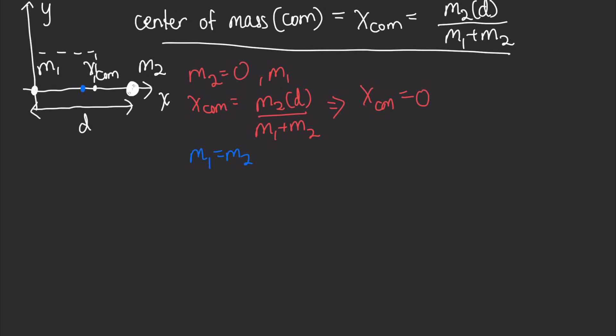So after calculating the x-center of mass, we get M2 times D divided by M1 plus M2, and this simply reduces to 2M2 times D divided by 2M2, and this is just equal to D over 2, which is the halfway point between them.